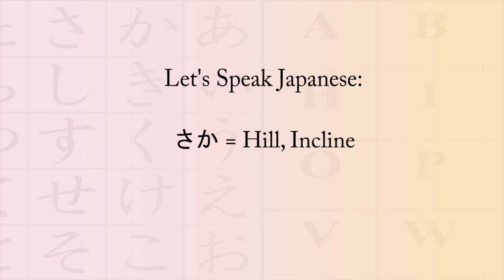The next word is saka, which uses the letters sa and ka. Put together it's pronounced saka, and the meaning is hill or incline. For example, the phrase saka wo noboru means climbing the hill. Once again: saka wo noboru, or saka wo noboru, which means climbing the hill. The word is saka, or faster: saka.